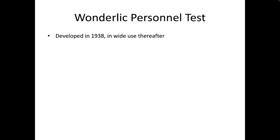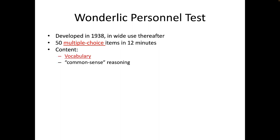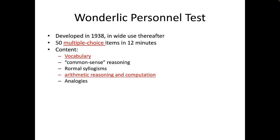The Wunderlich Personnel Test is one of the most commonly used general mental ability tests in the employment setting. It is inexpensive and quick to administer. Developed in 1938, it consists of 50 multiple-choice items and is a 12-minute timed test, with the score being the number of correct answers out of 50. There are two forms, which have shown substantially high parallel forms equivalency reliability. The content covers vocabulary, common sense reasoning, arithmetic reasoning and computation, analogies, perceptual skills, spatial relations, number series, scrambled sentences, syllogisms, and knowledge of proverbs — assessing a wide range of general mental abilities.